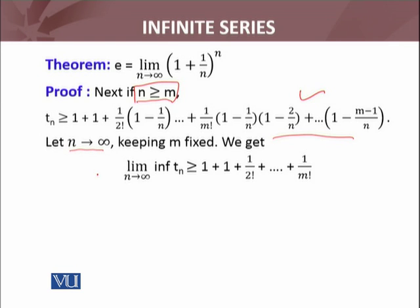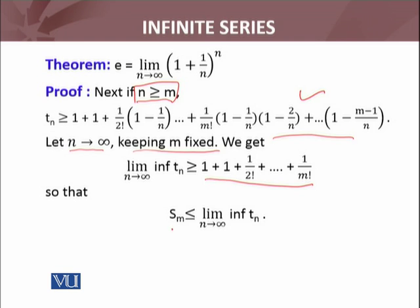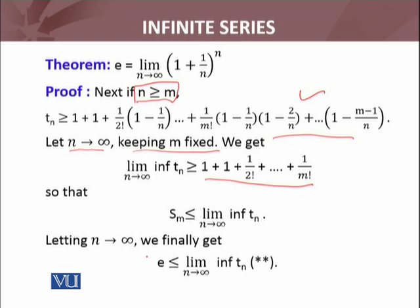Now we let n approach infinity while keeping m fixed. Taking the limit inferior as n approaches infinity of t_n: as n→∞ the terms (1 − 1/n), (1 − 2/n), etc. all go to 1, and we are left with 1 + 1 + 1/2! + ... + 1/m!, which is exactly s_m. So s_m ≤ limit inferior as n approaches infinity of t_n. Letting m approach infinity gives e ≤ limit inferior of t_n.